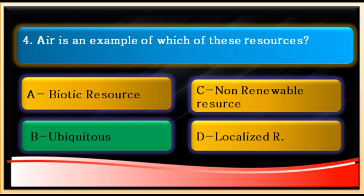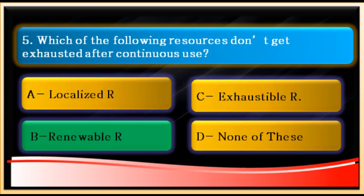Question number five: which of the following resources don't get exhausted after continuous use? The answer is B: renewable resources, because they get renewed through physical, chemical, and biological processes. Those resources which don't get exhausted are called renewable resources.